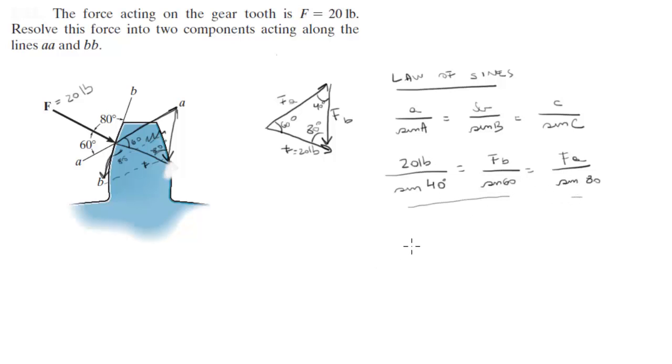So we give you these two numbers: FB is equal to 26.95 pounds and FA is equal to 30.64 pounds. Final answer.